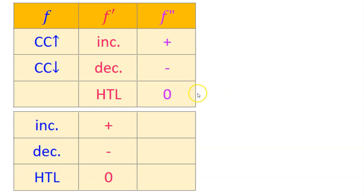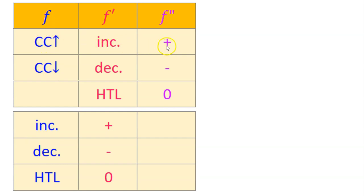In fact, on your next test, that's exactly what I want you to do — write this chart in the margin or on a piece of scratch paper. This chart tells us that wherever f is concave up, f prime will be increasing, and f double prime will be positive. If f is concave down, f prime is decreasing, and f double prime is negative.